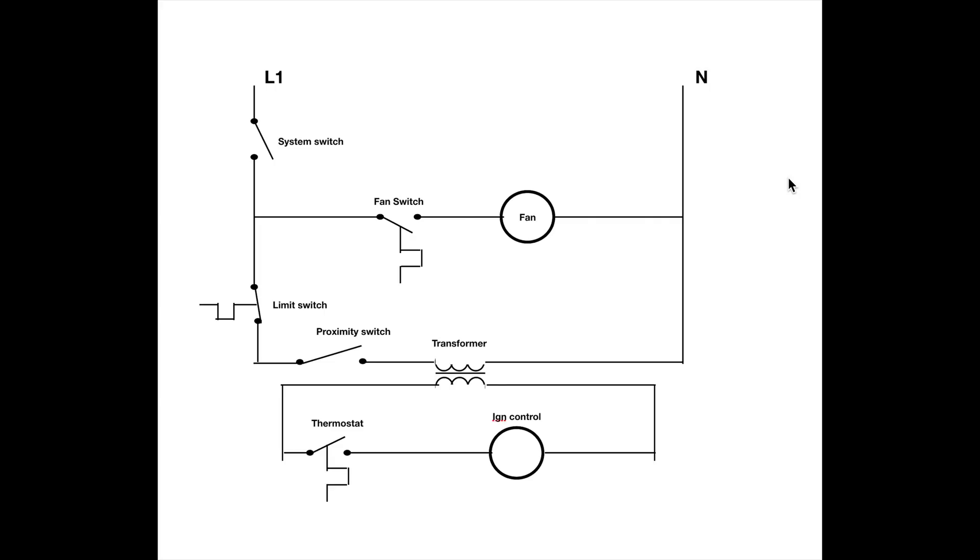Okay, this is a schematic diagram, kind of a simple one. System switch is here, that's just a manual on-off switch. I'll show it to you out on the unit heater also but I'm gonna go through the schematic here right now. Then you have a heat operated fan switch right here and a fan motor. So when the heat exchanger heats up, it's gonna close that and turn it on.